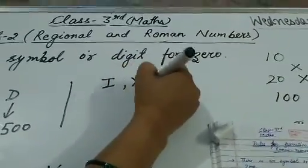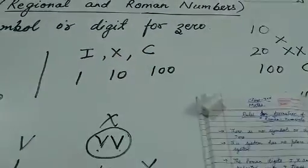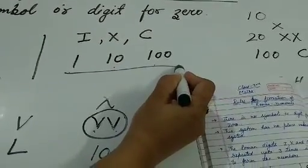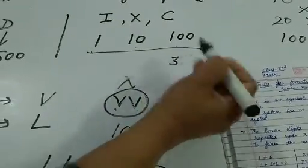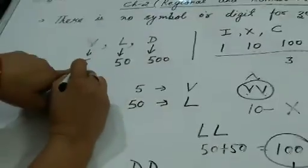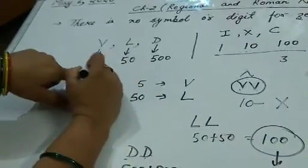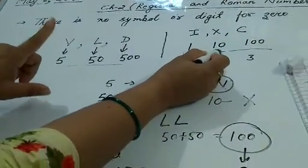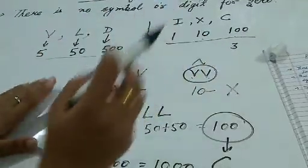देखो — I, X and C: I was your 1, X was your 10, C was your 100. When 1, 10, 100 ये repeat हो सकते हैं — कितनी बार? 3 times. And जबकि 5, 50, 500 यह repeat नहीं हो सकते. इनको आप सिर्फ one time ही use करेंगे. V, L और D को सिर्फ one time use करना है.